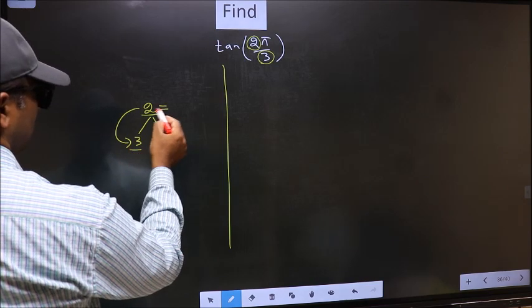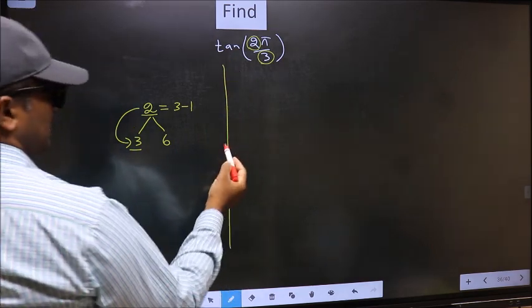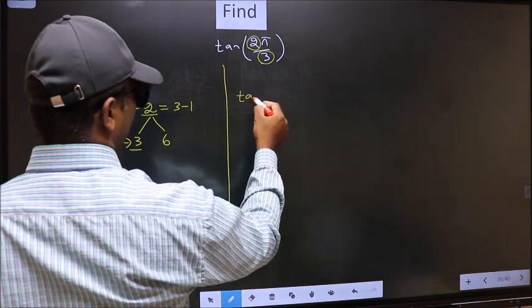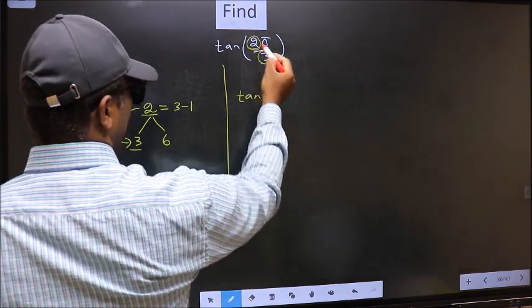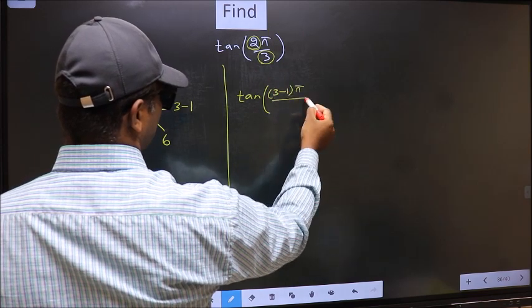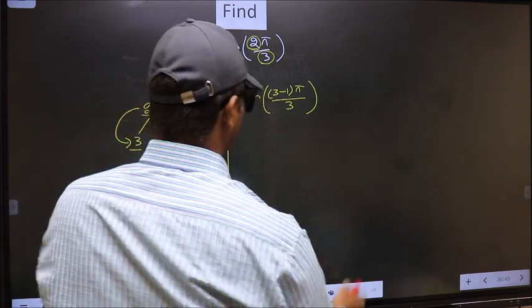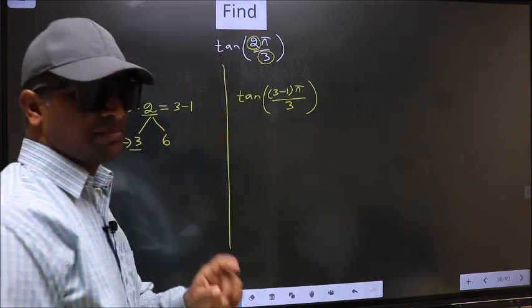So now 2 should be written as 3 minus 1. So this will become tan. In place of 2, now we write 3 minus 1, π/3. This is your step 1.